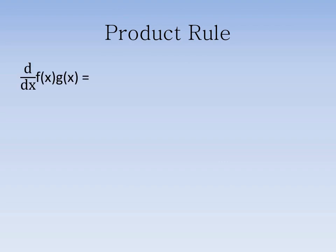The product rule is used when we try to differentiate the product of two unlike functions. If the two functions can't be combined, the product rule is necessary to compute the derivative.